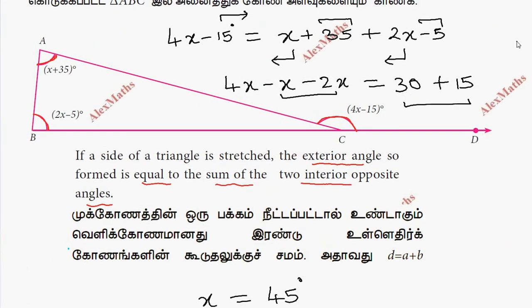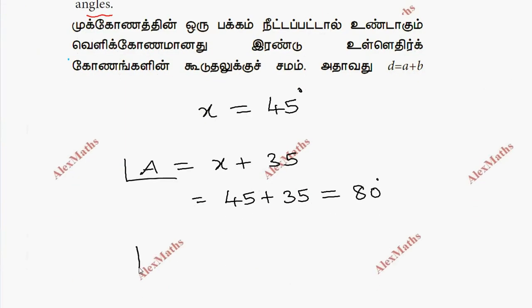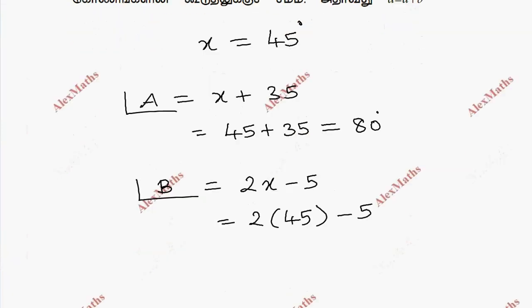For angle B, which is 2x minus 5, we substitute x equals 45. So 2 times 45 minus 5 equals 90 minus 5, which is 85 degrees.